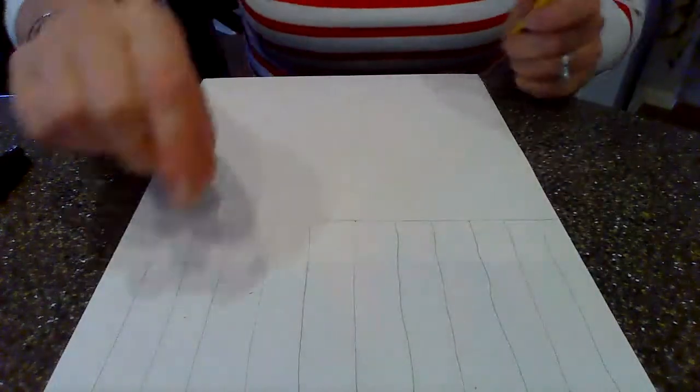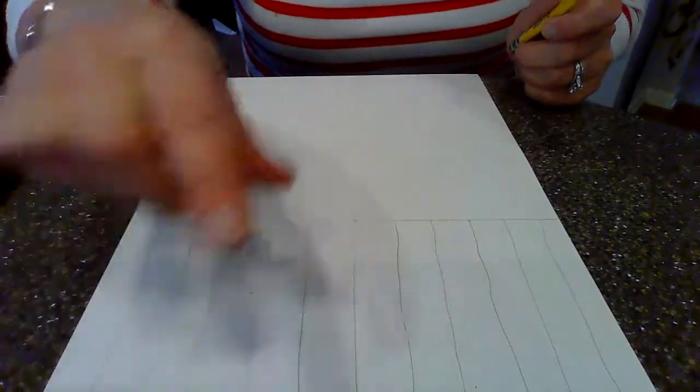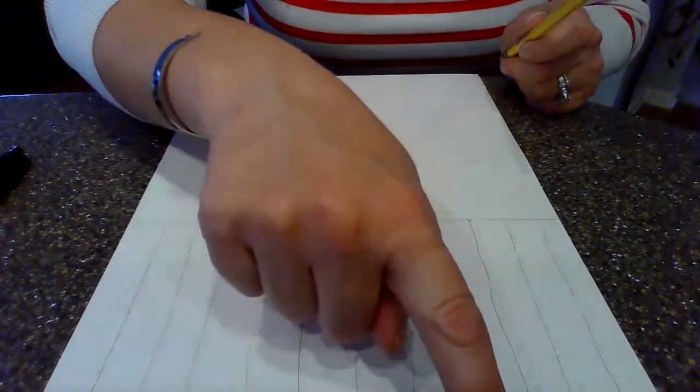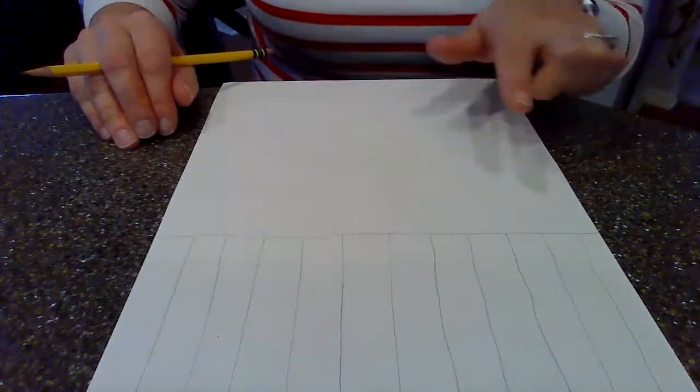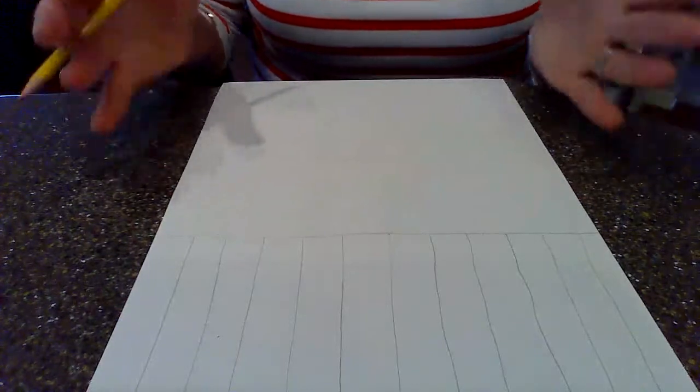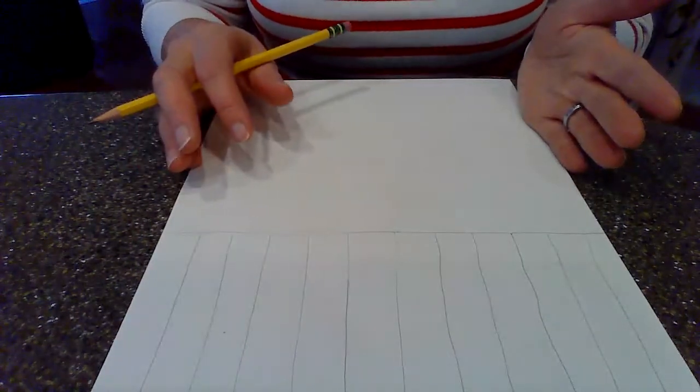So go ahead and get your fence drawn and then we'll go on to the kittens if you need to pause it. So from there, we want to figure out how many cats we want. I'm working on a small piece of paper.